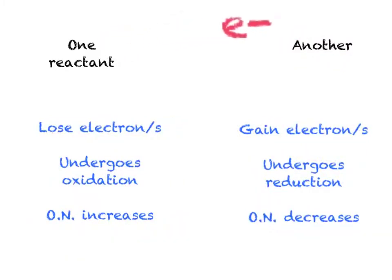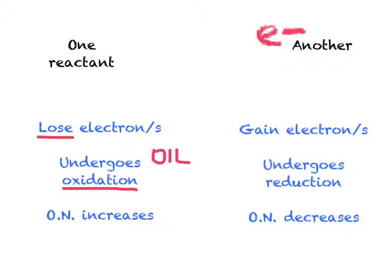Let's look at this now using more formal terminology. If our first reactant loses an electron or electrons, that means that it is undergoing oxidation. Oxidation is loss, or loss of electrons is oxidation, however you want to remember it. We also now know that the oxidation number of the atom in that compound is going to increase. So we can see that there's a link between oxidation and an increase in the oxidation number.